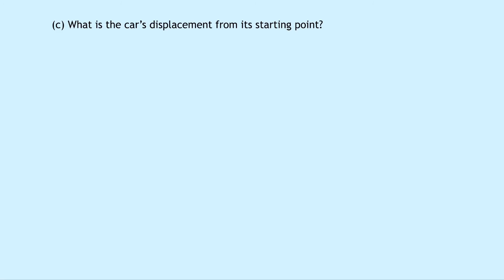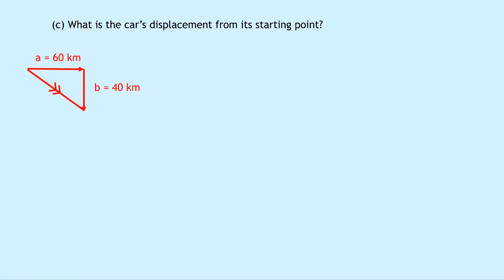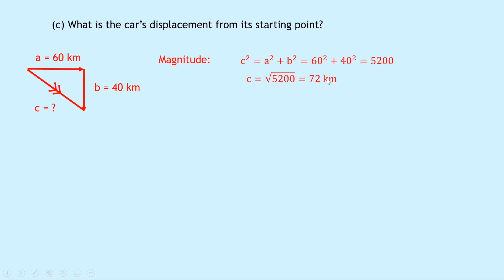Part C says what is the car's displacement from its starting point? I'm going to use the calculation method. I've got my vector in the east direction, A equals 60 kilometres, and my vector in the south direction, B equals 40 kilometres. Drawing our resultant vector from start to finish — putting the two arrows on to show the resultant vector — we call that C and find the magnitude using Pythagoras. C squared equals A squared plus B squared: 60 squared plus 40 squared gives 5,200. Square rooting that answer gives 72 kilometres.